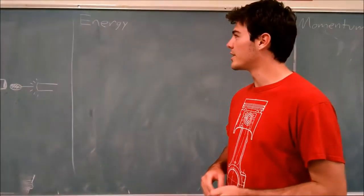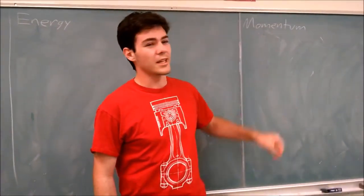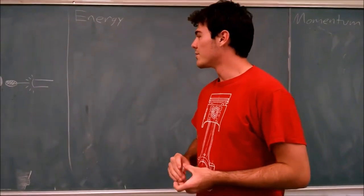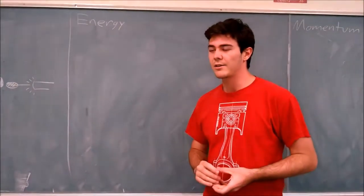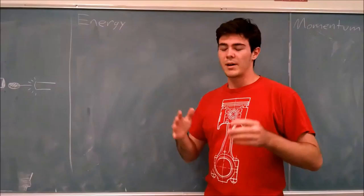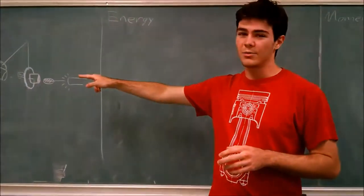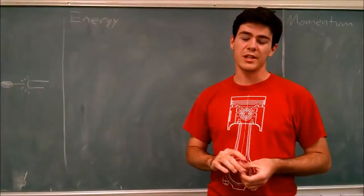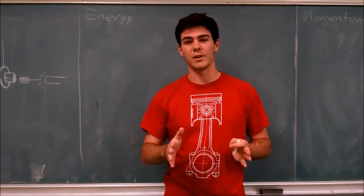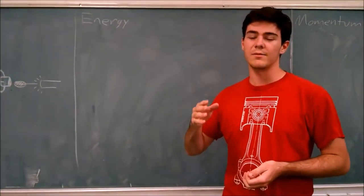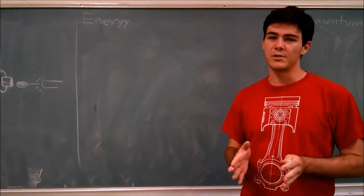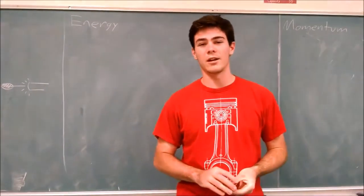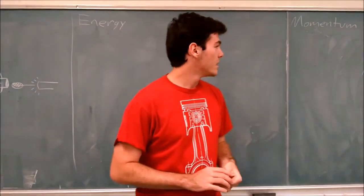We figured out that we're going to need to use the energy lens and the momentum lens to be able to figure the speed of the potato out. The reason being is you can find the energy of the combined potato and target using the change in height that we got from the video. And then that potential energy can be used to find the kinetic energy of the two combined, which then can be used to find the velocity of the two combined, which then if you look at the momentum lens and the law of conservation of momentum,